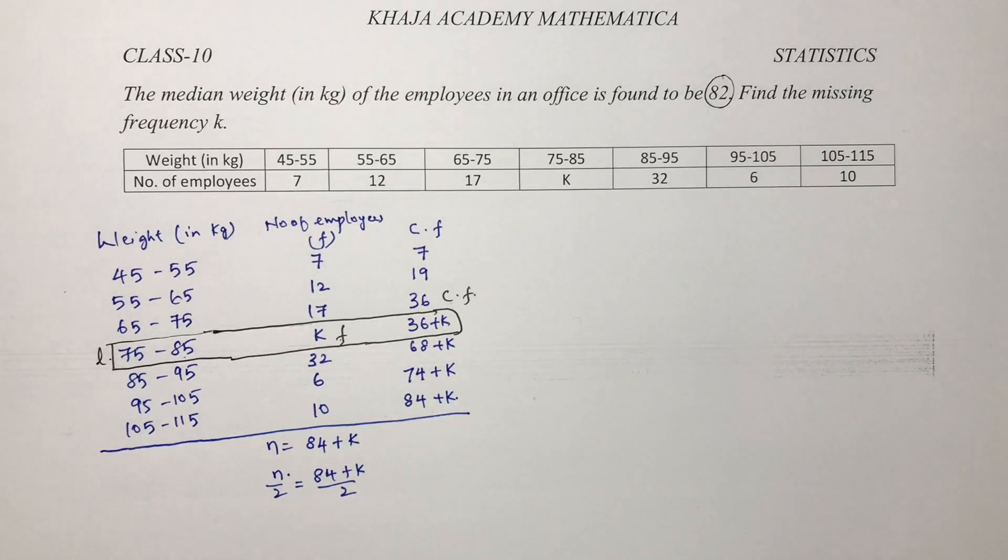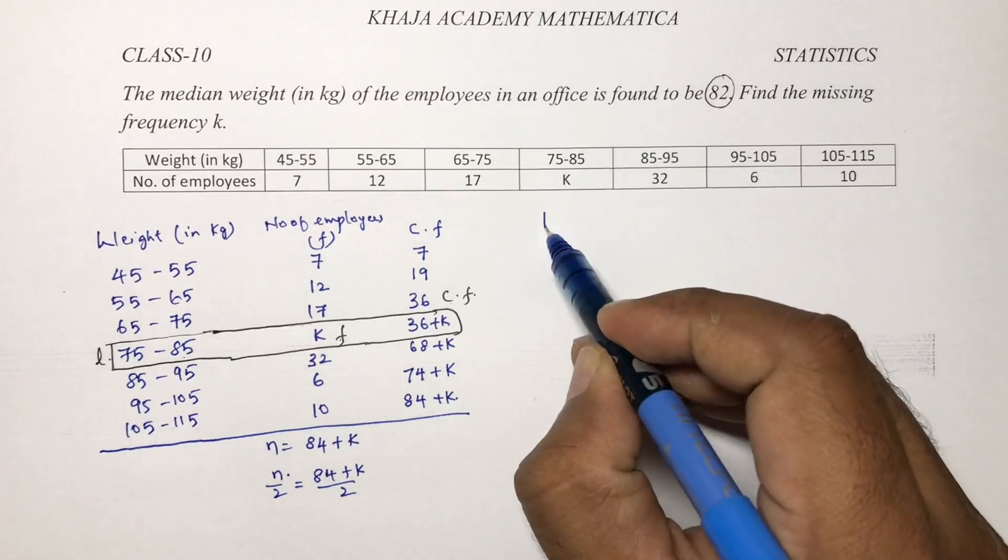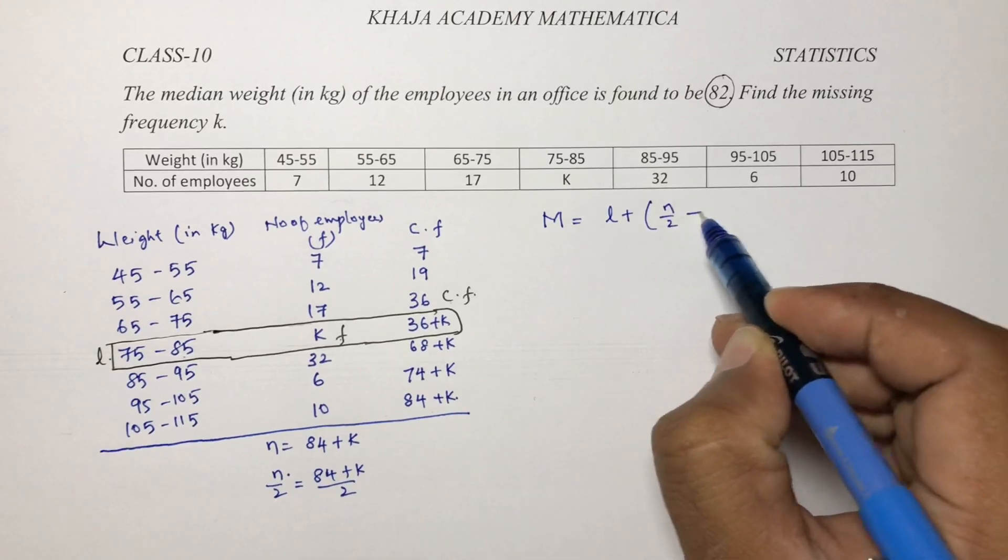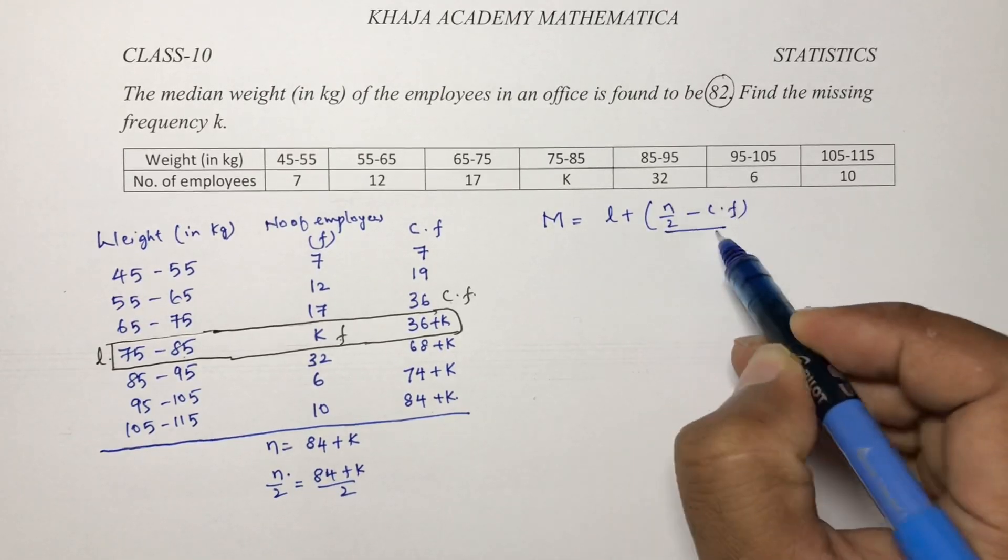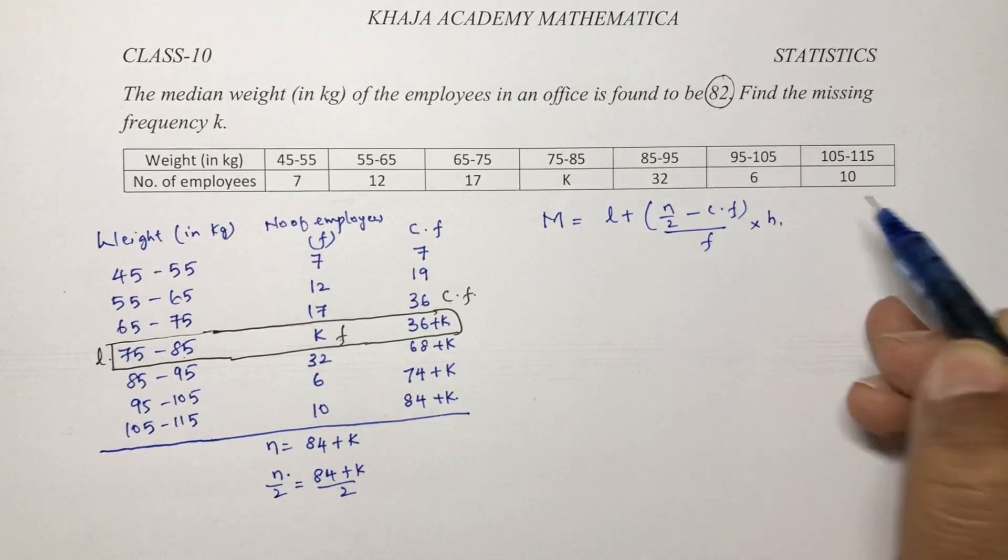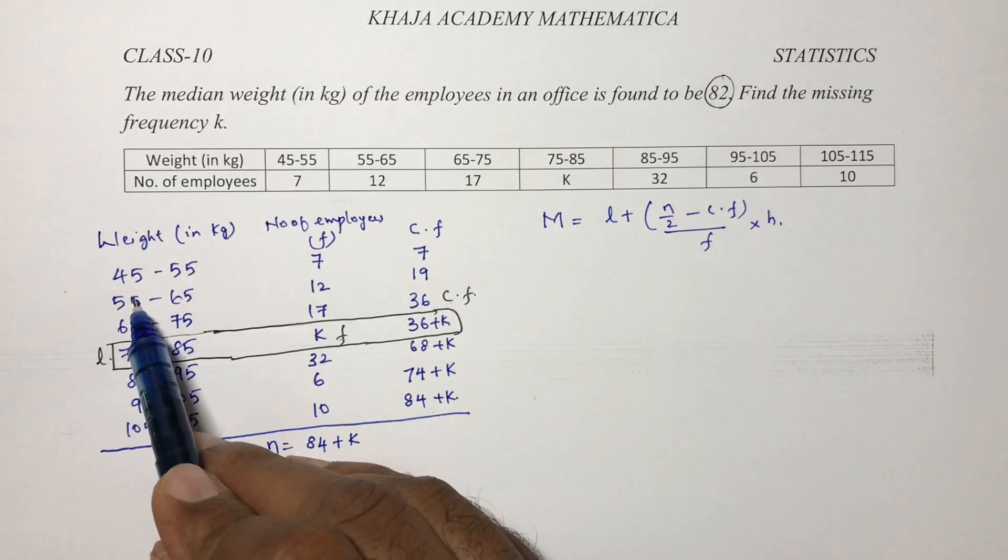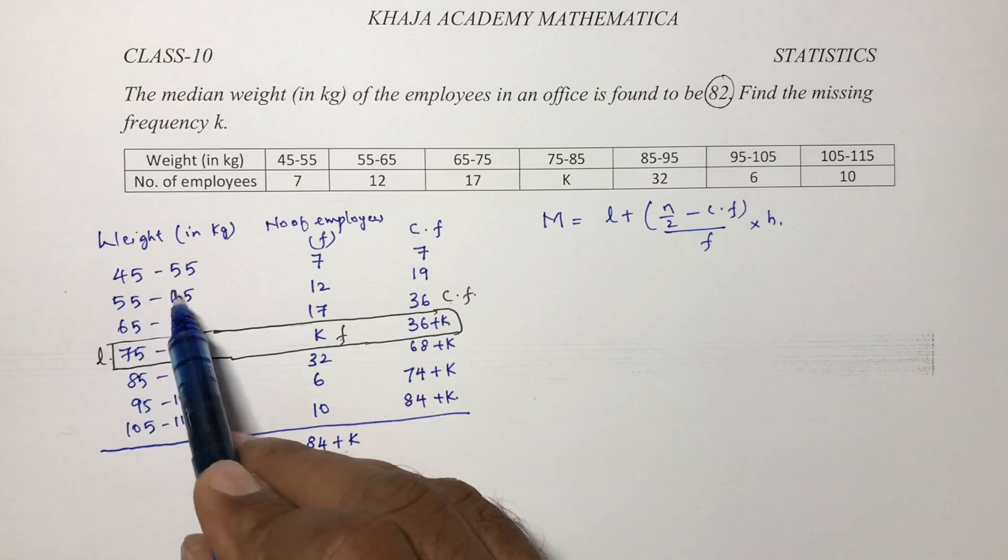Now these values if you will substitute in the formula, that is median equals l plus n by 2 minus cf by small f into h. Now here see h value is the class size.